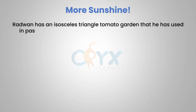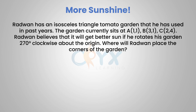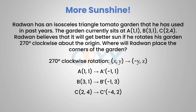Rodwin has an isosceles triangle tomato garden. The garden currently sits at A (1,1), B (3,1), and C (2,4). Rodwin believes it will get better sun if he rotates his garden 270 degrees clockwise about the origin. A 270 degree clockwise rotation takes (x,y) and makes it (-y,x). So point A (1,1) becomes A prime (-1,1). Point B (3,1) becomes B prime (-1,3). And C (2,4), switching x and y and negating the y, gives us (-4,2). Those are the coordinates of Rodwin's new garden to get the better sun.